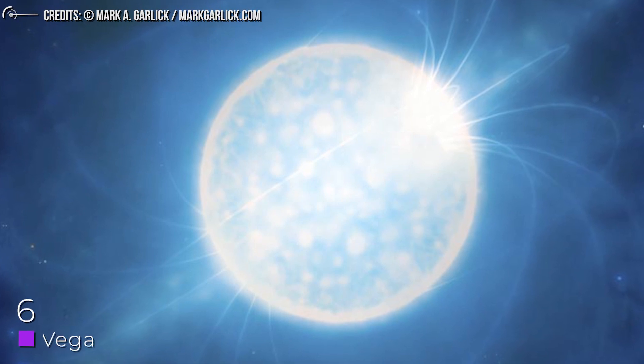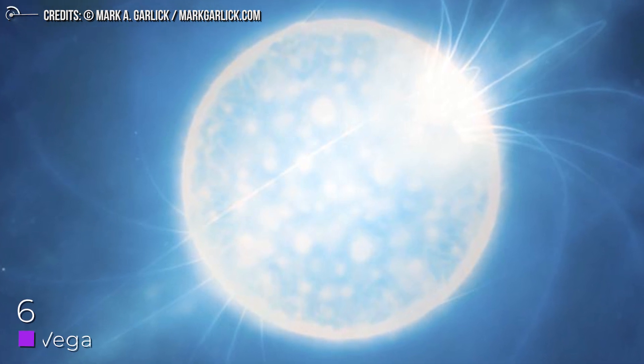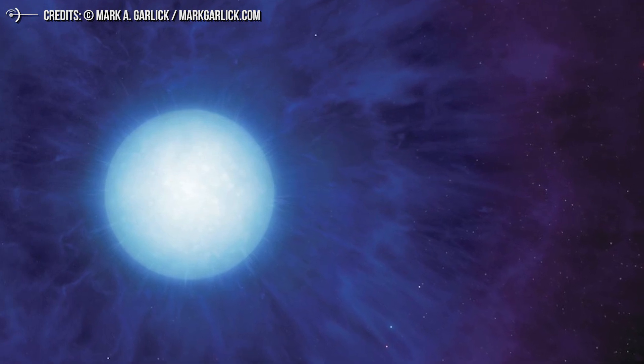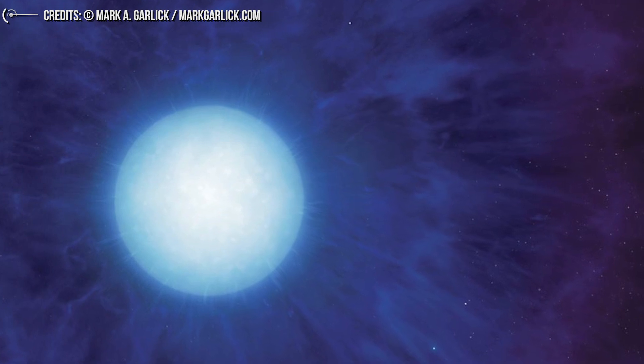Number 6: Vega. We live with the concept that the poles of a planet are usually colder than the equator. Can we say the same thing about stars? Well, telescopic observations in 2006 revealed that Vega is whipping around so quickly that its poles are several thousand degrees warmer than its equator.